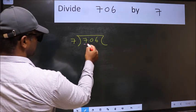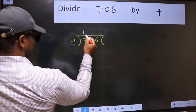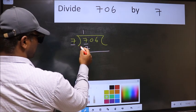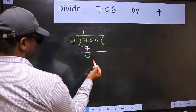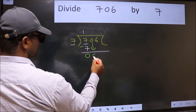Here we have 7. Here also 7. When do we get 7 in 7 table? 7 ones is 7. Now we should subtract. We get 0. After this, bring down the beside number. So 0 down.